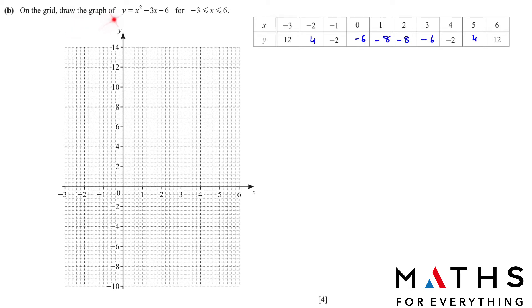Part (b): On the grid, draw the graph of y = x² - 3x - 6 for -3 to 6. The values from -3 to 6 we already have. Our Y values, we just have to plot them now. We start with -3. When x is -3, these are your X values, these are the corresponding Y values. When x is -3, y is 12. When x is -2, y is 4. This is the way you plot it. Now you have to join the points and make it into a curve. Remember it should be this shape and not like a V. Also don't join this point and make a straight line. It has to be a U shape.